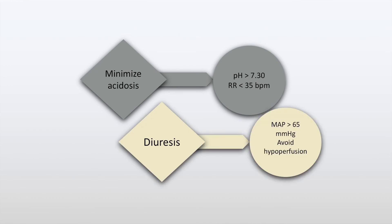Diuresis must be undertaken. However, hypoperfusion must be avoided. As per the sepsis guidelines, the mean arterial pressure must be maintained at more than 65 mmHg.